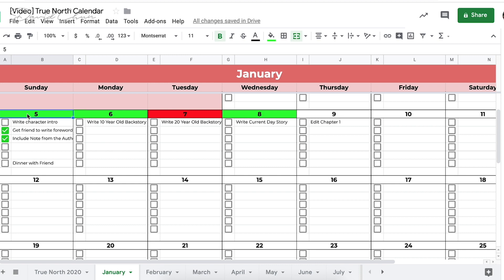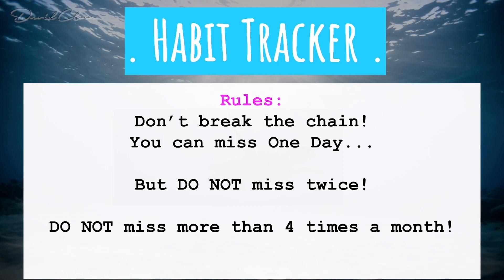Some rules for the habit tracker — to make it like a game: rule one, do not break the chain. James Clear, author of 'Atomic Habits,' says you can miss one day for emergencies, but never miss twice in a row. My added rule: do not miss more than four times a month total. Most of the month should look very green. That's how we establish lifelong habits.